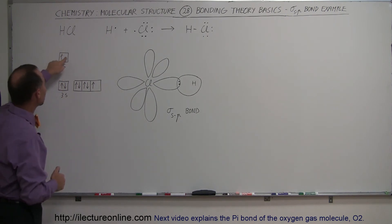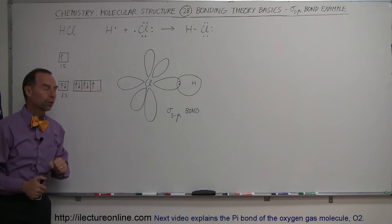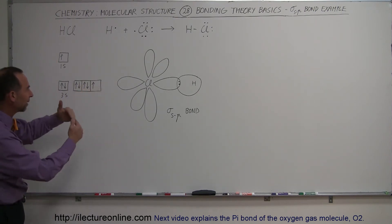Notice that there is one vacancy here in the one s orbital for hydrogen. There's one vacancy in the third p orbital for chlorine. And so they can then form a bond.